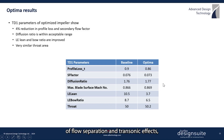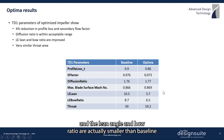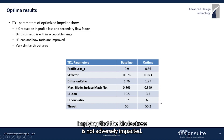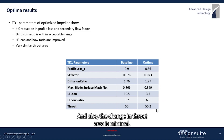The lean angle and bore ratio are actually smaller than the baseline, implying that the blade stress is not adversely impacted. Also, the change in throat area is minimal.